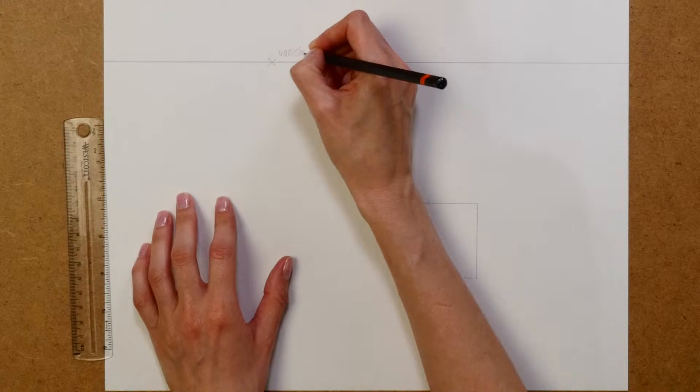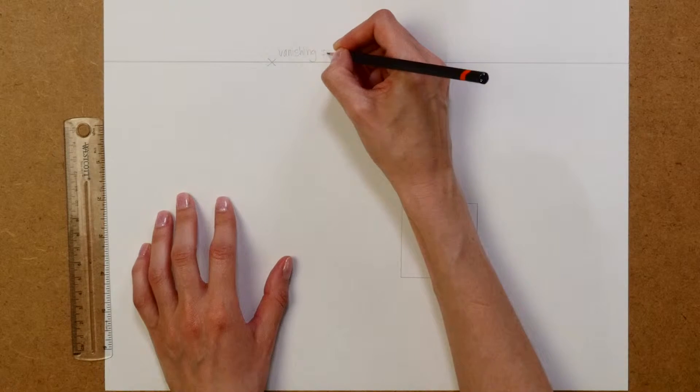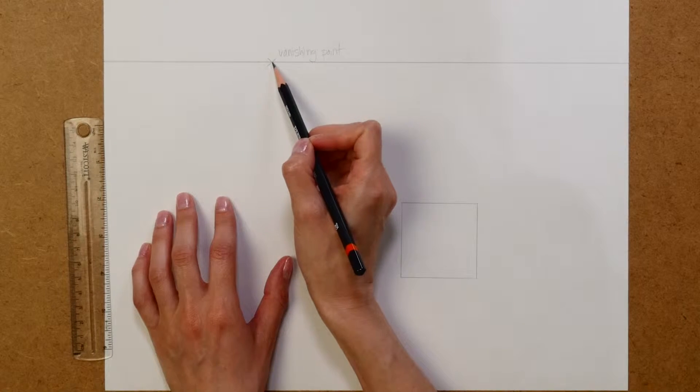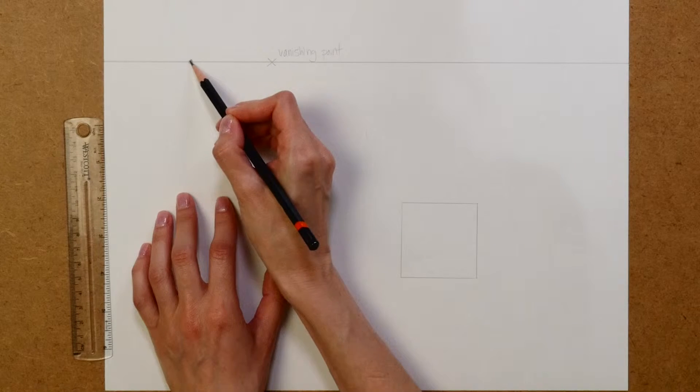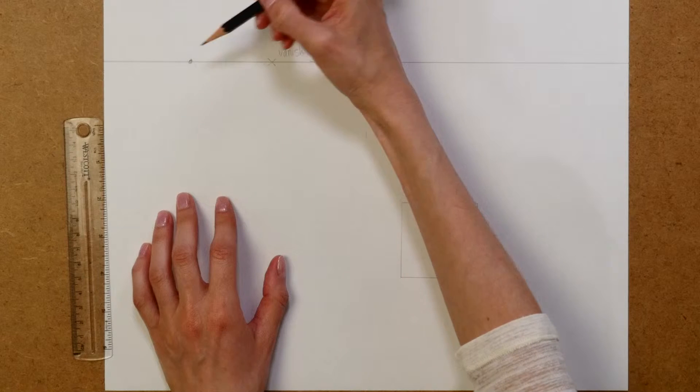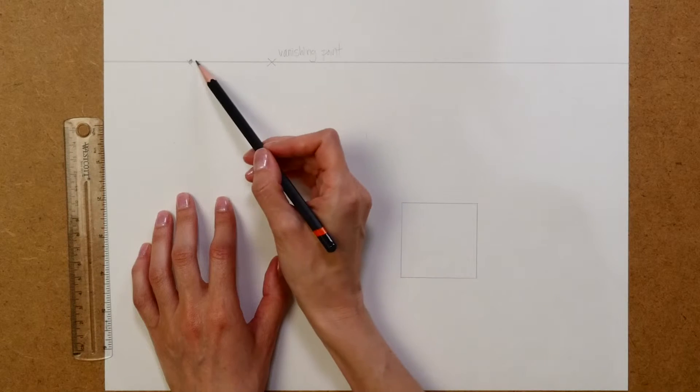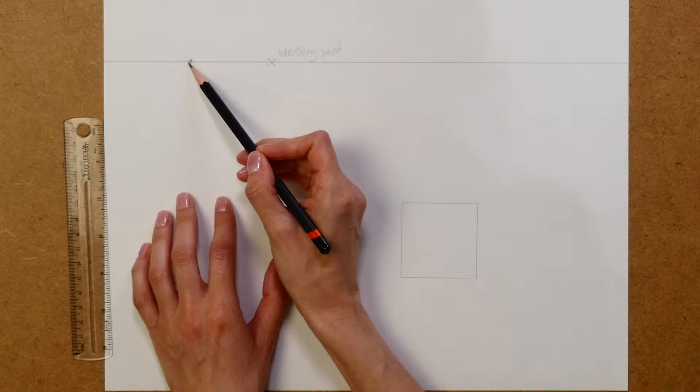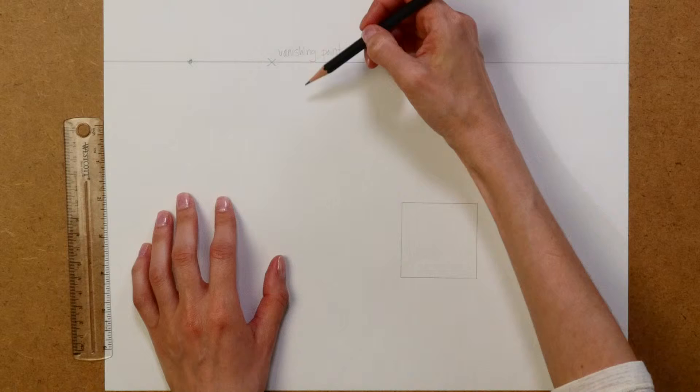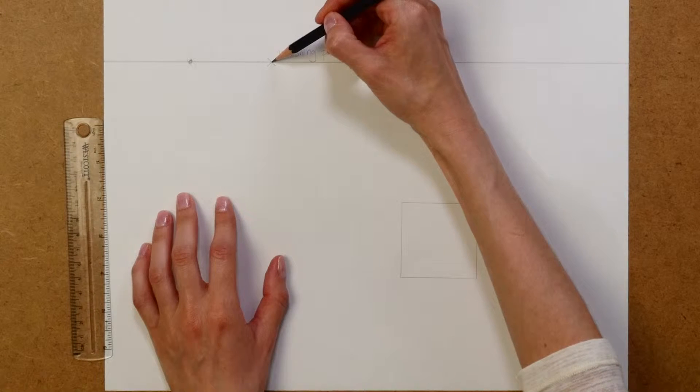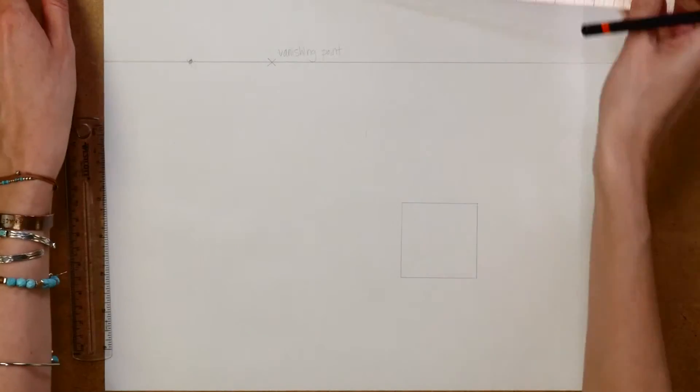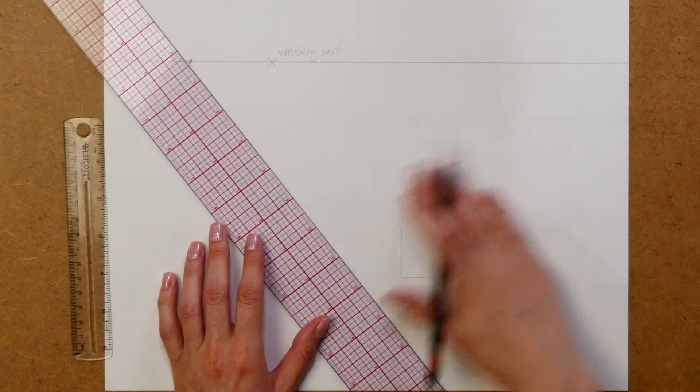I'm going to write vanishing point on there for you. One thing that's really important: I drew it with my ruler and made it an X. If I draw my vanishing point with a dot, I can wind up putting lines through the vanishing point on this side or that side, and they're actually different points on the horizon line. When I draw it like an X, I'll make sure I connect right at that intersection of the X and the horizon line, so I'm really connecting to one point only.